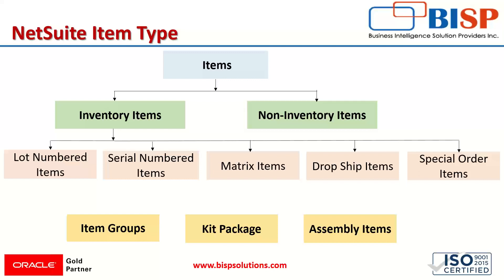Under inventory items, we have lot numbered items. Lot numbered item records track the quantity of items by assigning a specific number to a group or quantity of items.